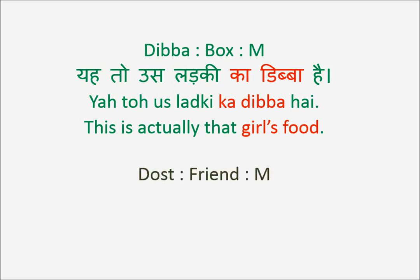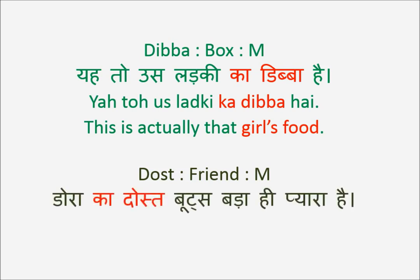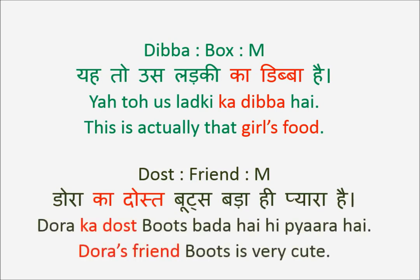Then Dost — Dost means friend, male, masculine. Dora Ka Dost Boots Bada Hi Piyara Hai. Dora's friend Boots is very cute. Dora is a female character, but her friend is Boots, and Dost is masculine. So Dora Ka Dost, not Dora Ki Dost. So what we learnt here: when the person or thing in question is masculine gender, you use Ka.